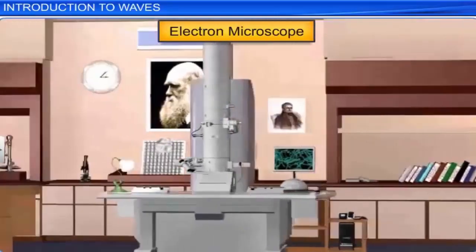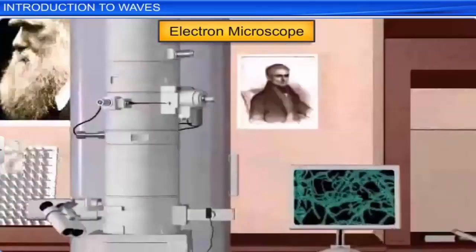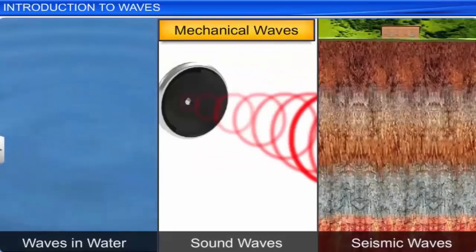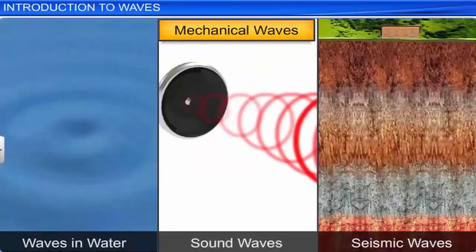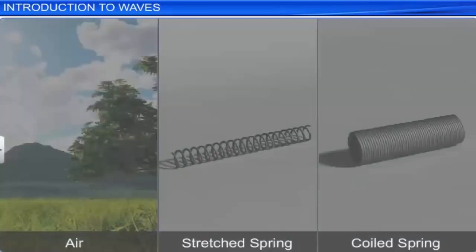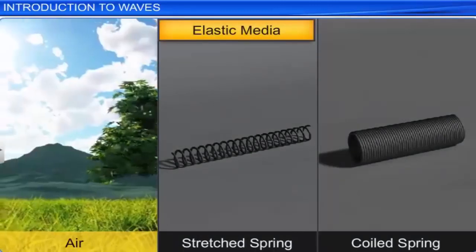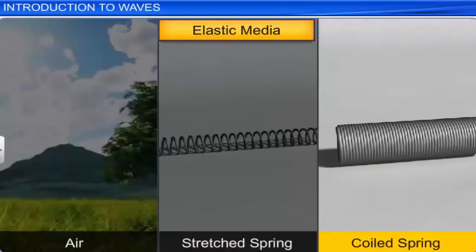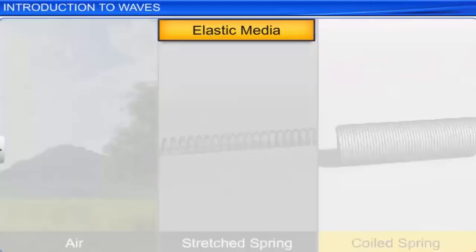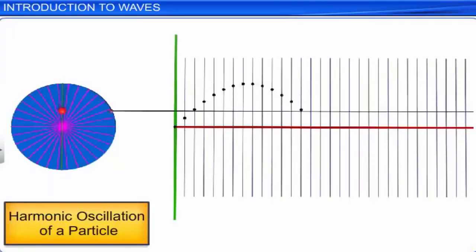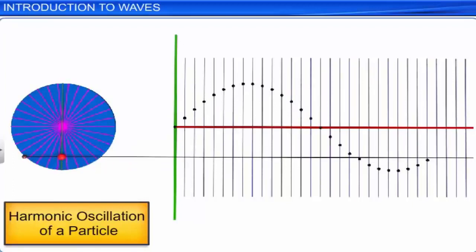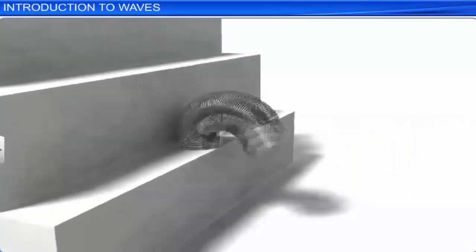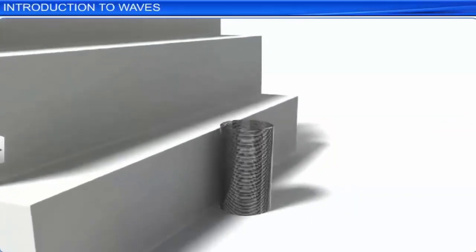Let us now discuss mechanical waves in detail. Waves in elastic media, i.e., air, stretched springs, coil springs, etc., are intimately connected with harmonic oscillations, which constitute mechanical waves. To understand this better, let's consider the example of a slinky. When one end of the slinky is fixed and a slight disturbance is created at the free end, we observe the disturbance carried to the fixed end of the slinky.